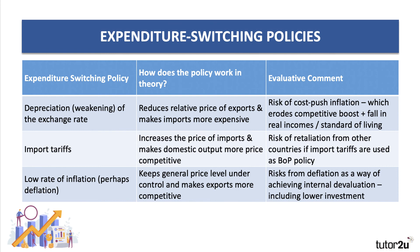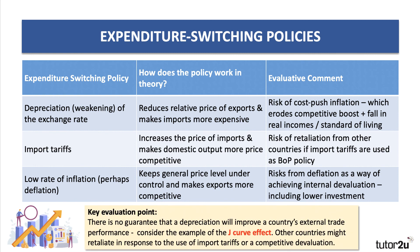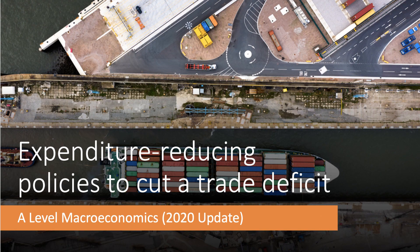So be prepared, when talking about policies to control a trade deficit, to analyze and evaluate expenditure switching policies. We're going to have a special video on the J-curve and currency depreciation — don't forget there's no guarantee that currency depreciation will improve a country's external trade balance. Think about the J-curve effect and also the Marshall-Lerner condition. Other countries might indeed retaliate in response to use of a tariff or a competitive exchange rate devaluation. In our next video we will focus on expenditure reducing policies.